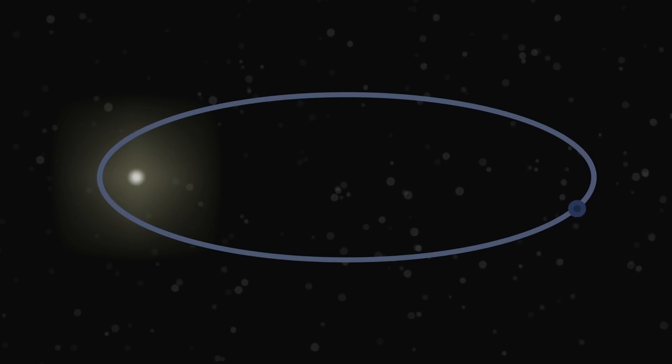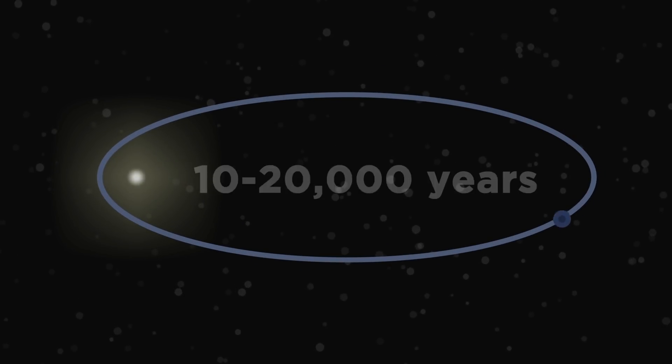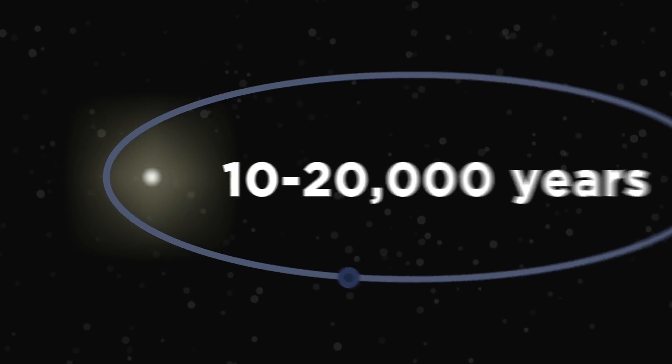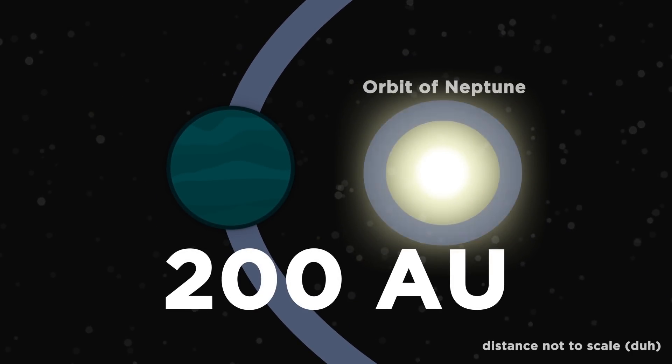In fact, this entire planet's orbit is crazy to think about. It would take between 10,000 and 20,000 years for it to make one complete orbit around the sun, which means at its closest point, it would still be about 200 AUs away.